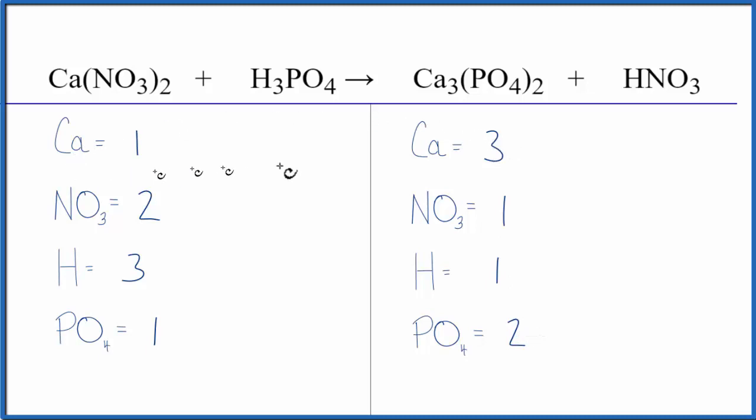Why don't we start out by balancing the calciums? We can put a three in front of the calcium nitrate. One times three. So now we have three. The calciums are balanced. And then nitrates, we have two times the one. So we have two nitrates times the three. That gives us six nitrates. And let's see what we could balance next.